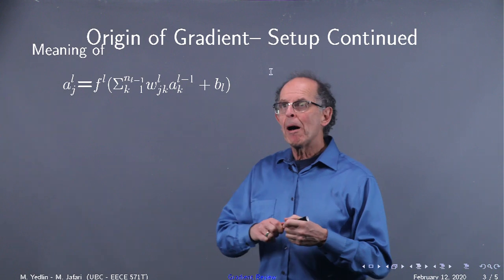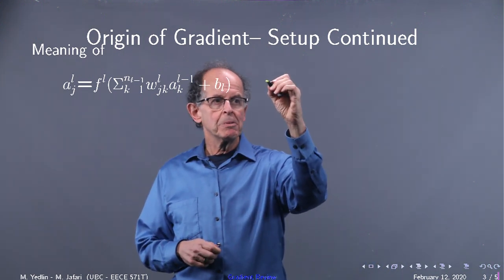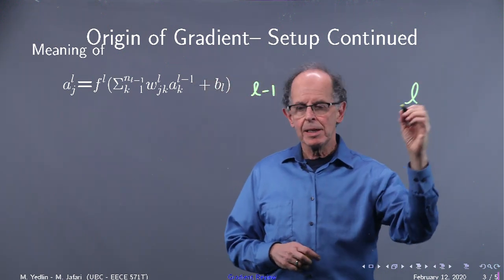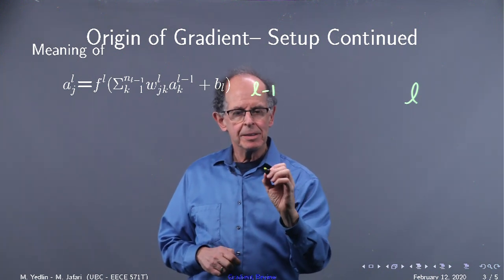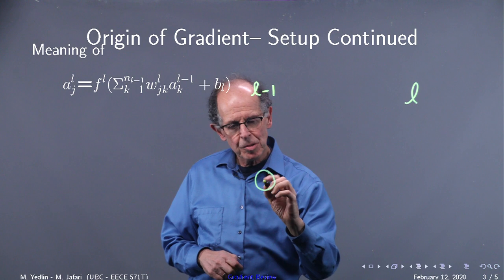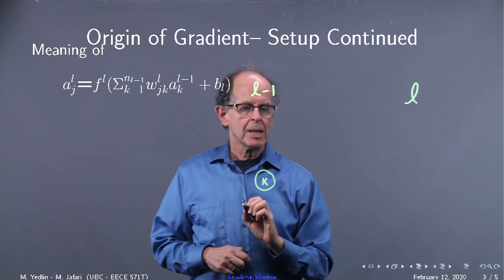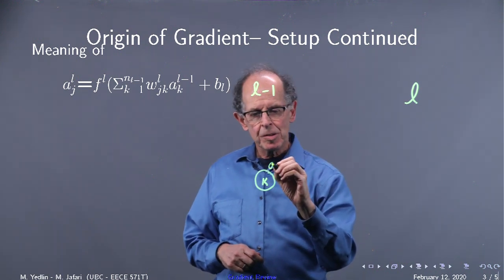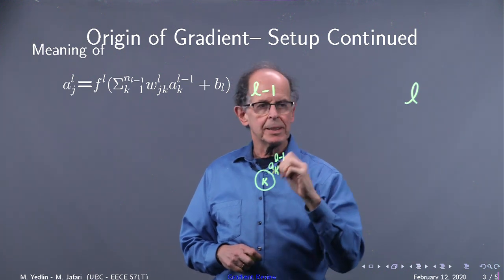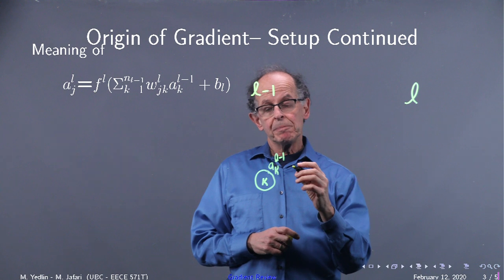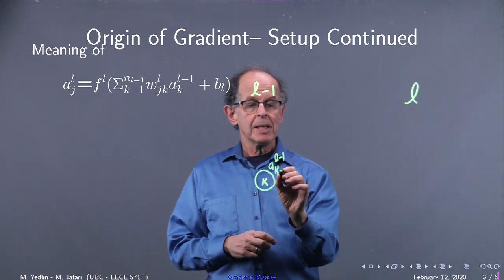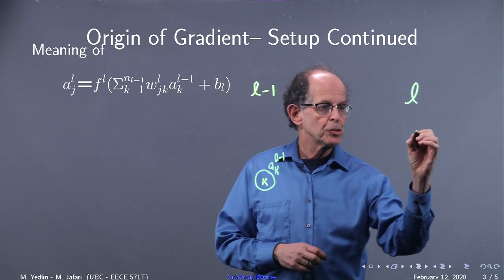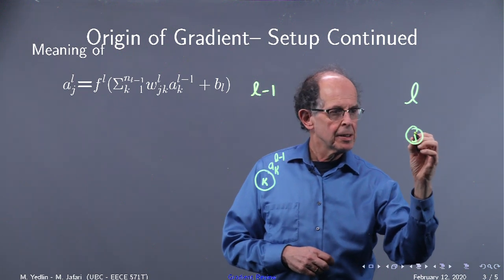Let's draw a picture of what this might look like. Here we have layer l. We'll pick the kth neuron in layer l minus one. So this is neuron k, and out of this comes the activation ak of l minus one. This output is now transmitted to the jth target neuron in layer l.